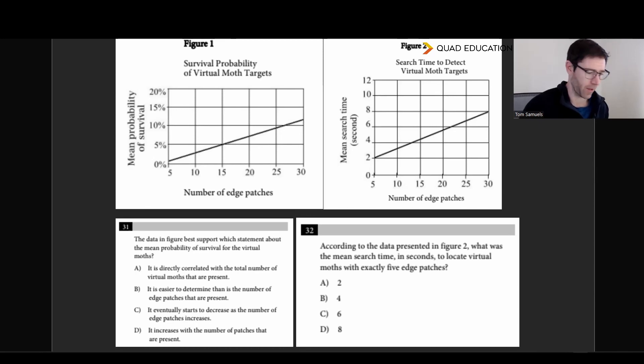These aren't that bad. So data in figure one best support which statement about mean probability of survival for the virtual moths. And you can see that really just the more edges they have, the more they survive. And that's just what answer D is. So I don't even know what these are, but that's pretty clear. And then according to the data presented in figure two, they tell you look at figure two. What was the mean search time in seconds to locate moths with five edge patches? And there's five and there's two. And so in this case, it's not that bad. So just look out for that as well.